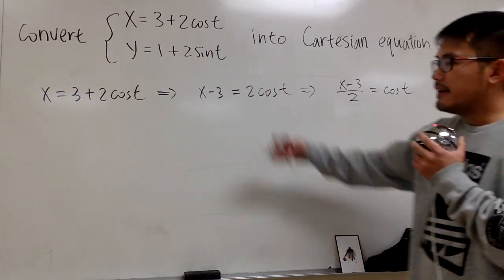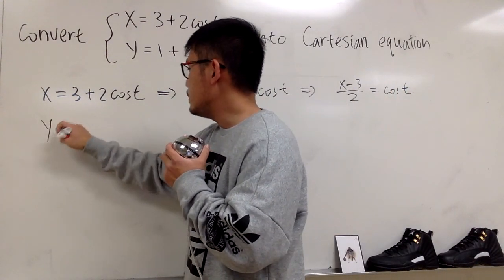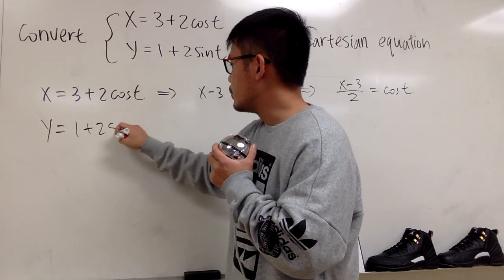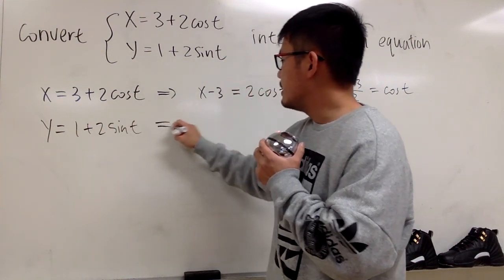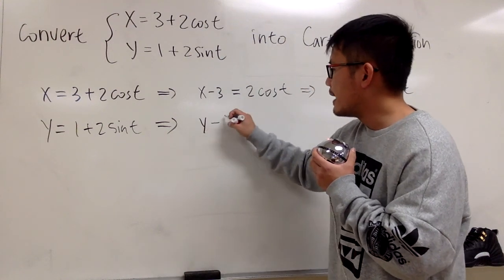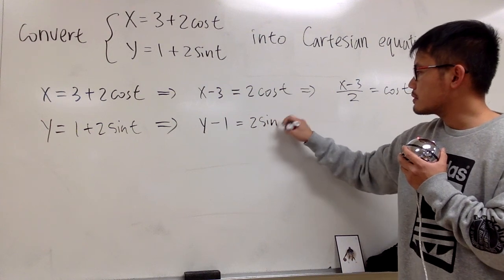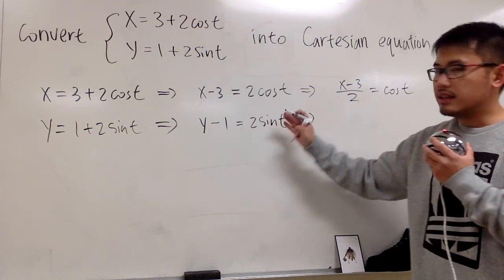And we will do the similar things with the y equation. y is equal to 1 plus 2 sine t, and this is going to give us minus 1 on both sides, so we have y minus 1, and that will give us 2 sine t.